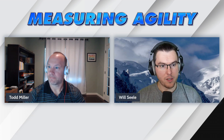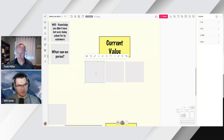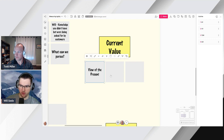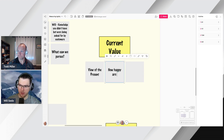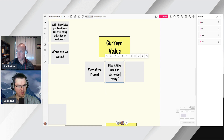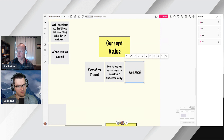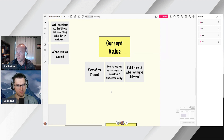Let's take a look at how we actually use this in practice in our own businesses. Moving to the board — this is a view of the present. How happy are our customers today? How happy are our employees today? How happy are our investors today? There are a lot of signs we can measure here. And really, current value is a validation of what we have delivered.